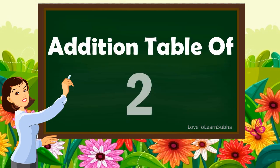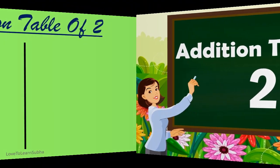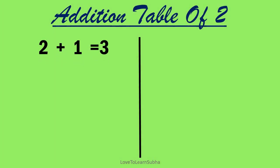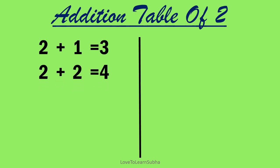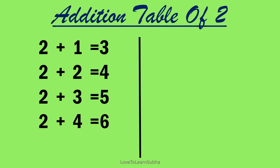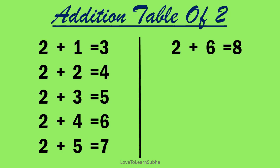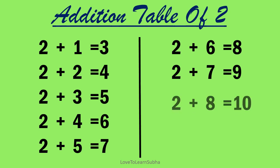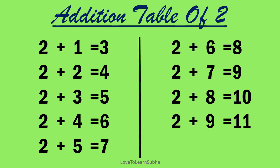Addition table of 2. 2 plus 1 equals 3. 2 plus 2 equals 4. 2 plus 3 equals 5. 2 plus 4 equals 6. 2 plus 5 equals 7. 2 plus 6 equals 8. 2 plus 7 equals 9. 2 plus 8 equals 10. 2 plus 9 equals 11. 2 plus 10 equals 12.